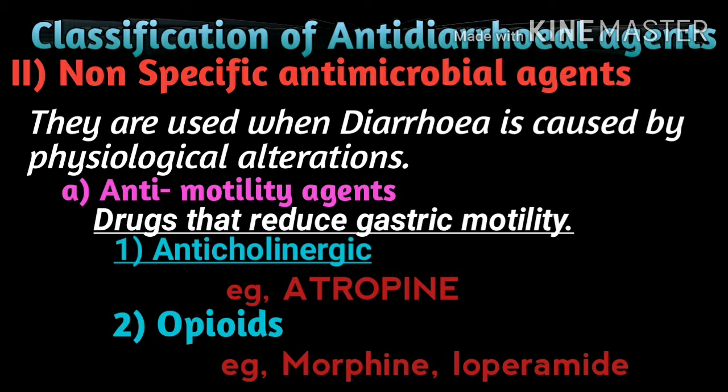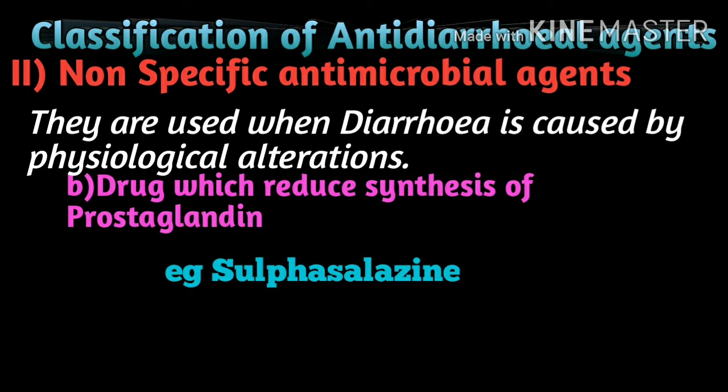These are the main examples of non-specific anti-diarrheal agents under the anti-motility class. When diarrhea is non-specific and caused by physiological alteration, another approach is to use drugs which reduce the synthesis of prostaglandins — for example, sulfasalazine. So these are the four main classes of anti-diarrheal drugs.